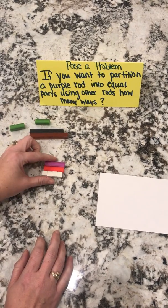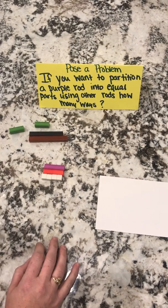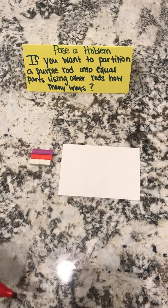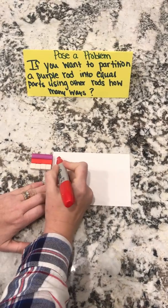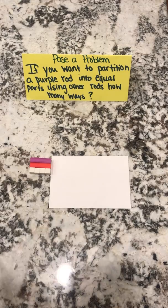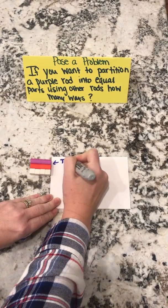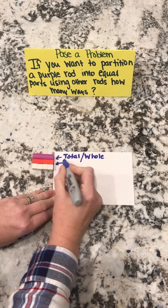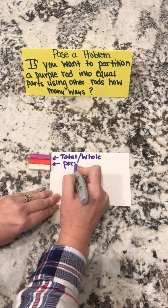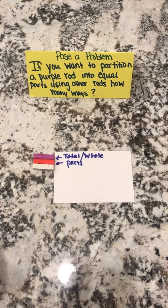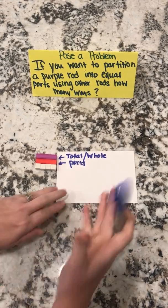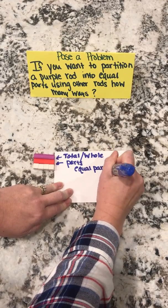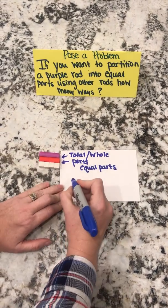Now that I've determined that I can partition — and we would have students try all the colors — for the sake of this, we know we can use two colors. Now I'm going to ask students: what operations does my partitioning show? They're going to see that my purple rod was my total amount, that purple rod is broken up into two different parts, and we're going to discuss that we have equal parts.